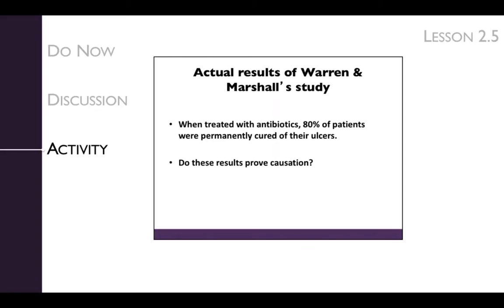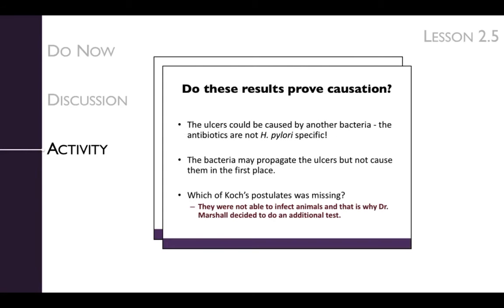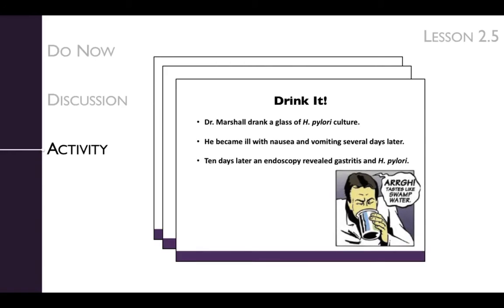The next few slides summarize Dr. Marshall's results, which support the idea that ulcers are caused by H. pylori, but still fail to complete Koch's last two postulates, causation and re-isolation. In an attempt to overcome this limitation, Dr. Marshall did the unthinkable. He drank a culture of H. pylori. He did develop symptoms of gastritis, but he did not develop ulcers.